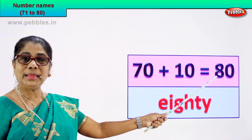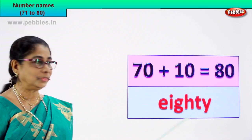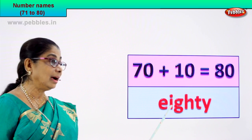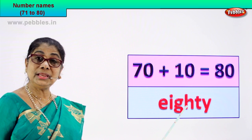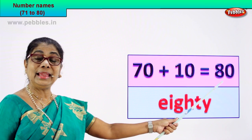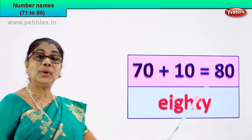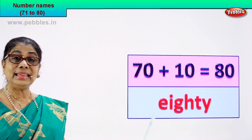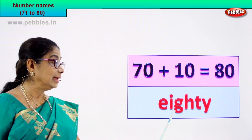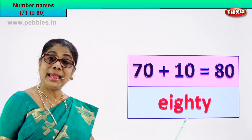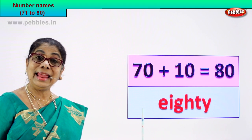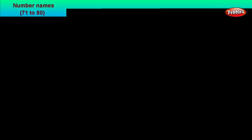Now how do we write the name of this numeral? e-i-g-h-t-y — 80. 80: e-i-g-h-t-y — 80. Good.